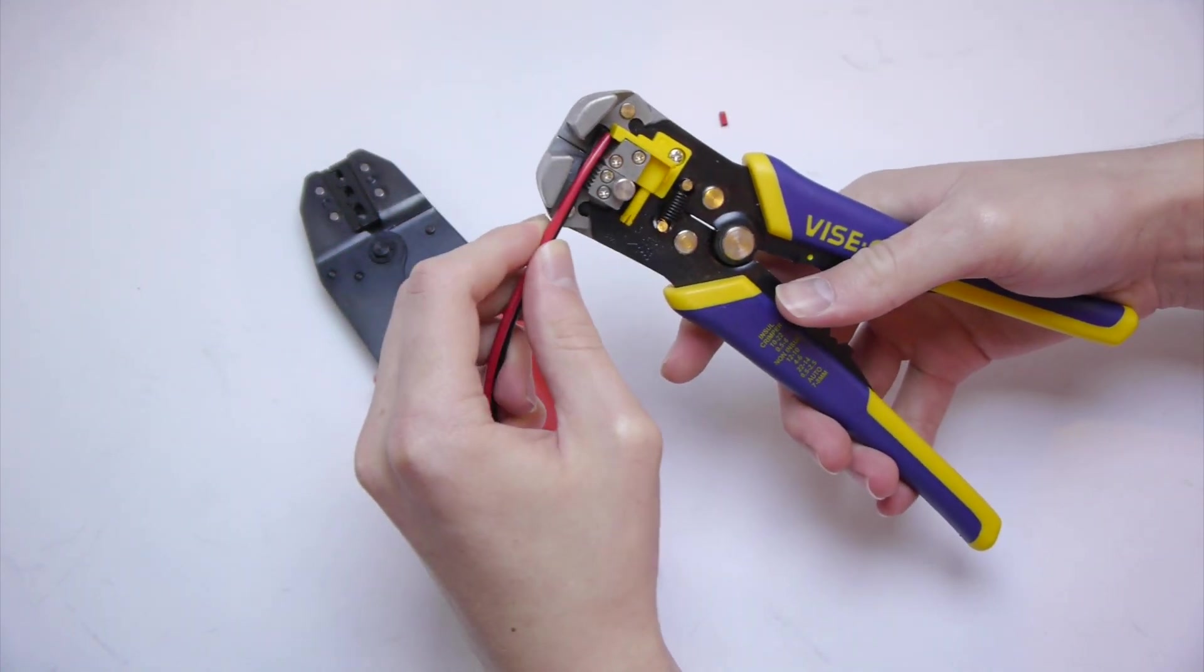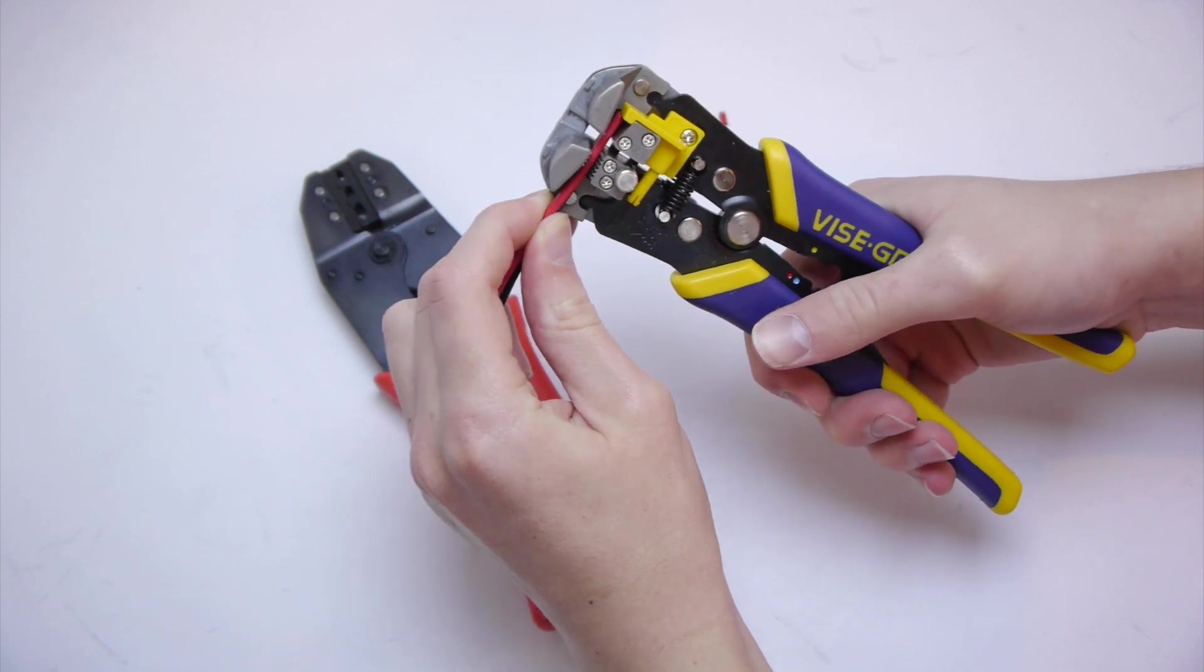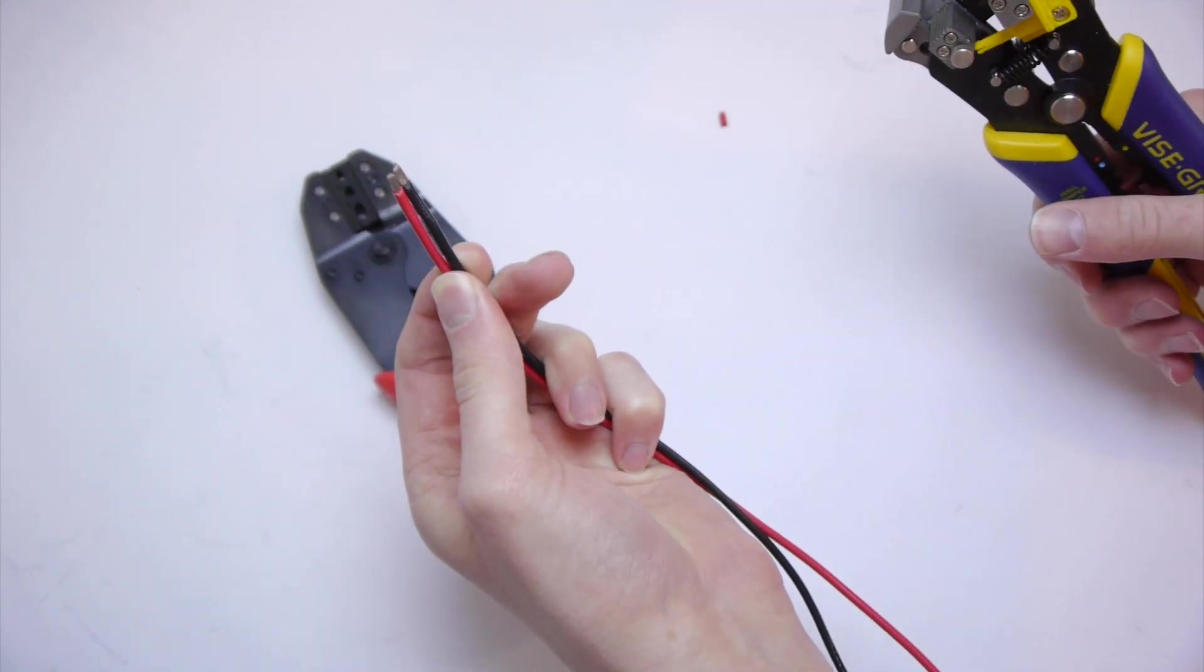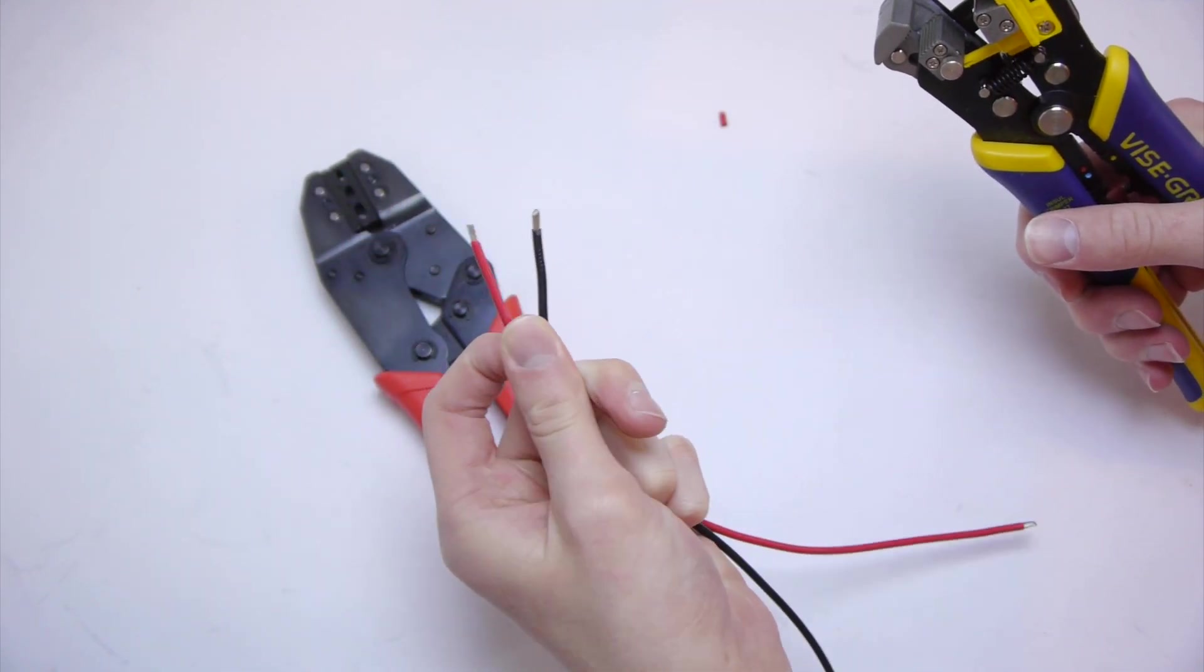So just put the two wires, make sure both of them are touching the yellow plastic part, and then just pull, and it will give you two very nice stripped ends.